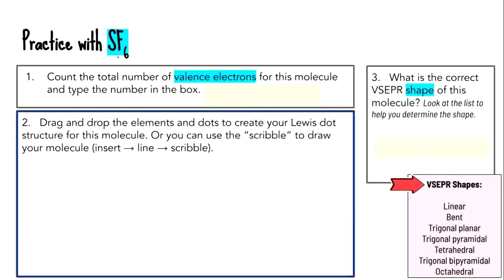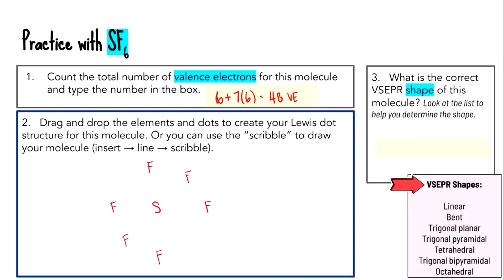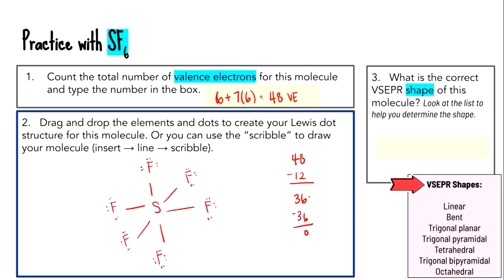Let's draw SF6. We have 48 valence electrons total. Sulfur goes in the middle with six fluorines on the outside — left, right, top, bottom, and diagonally. After drawing six bonds, we used 12 electrons, leaving 36. Those 36 go on the fluorines — six on each — and we used all 36. SF6 is an octahedral shape.